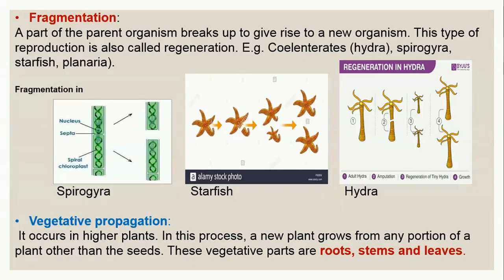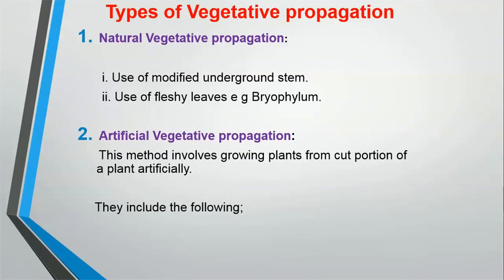The last type of asexual reproduction we are looking at is vegetative propagation. It occurs in higher plants, that is, flowering plants. In this process, a new plant grows from any portion of a plant other than the seed. Normally, to plant a mango or maize you would use seeds, but in vegetative propagation you don't need seeds — you can use other vegetative parts such as roots, stems, and even leaves.